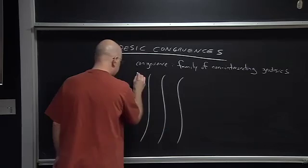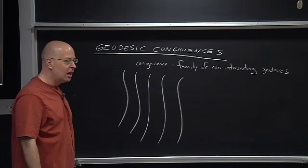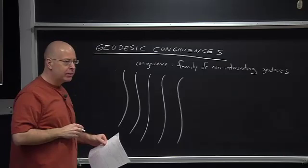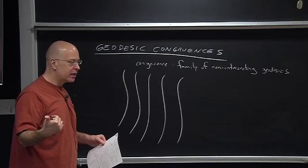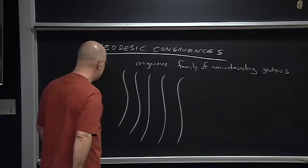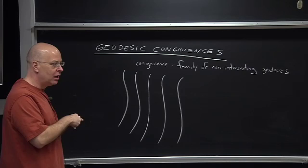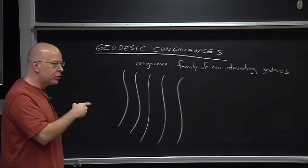What you have to imagine is that I'm really filling three-dimensional space up with curves — we have curves basically everywhere. At every spatial point we have a curve that passes through that point, and only one curve, because that's the non-intersecting condition. We're going to pick one of them, call it a reference geodesic, and describe the behavior of neighboring geodesics using our deviation vector, which we talked about last week.